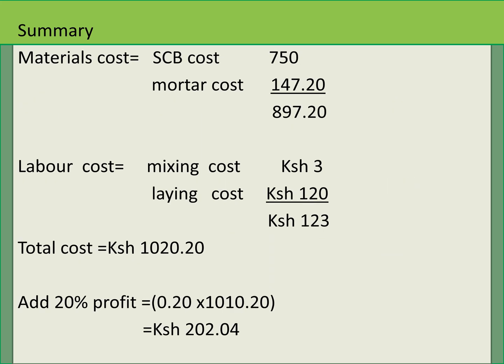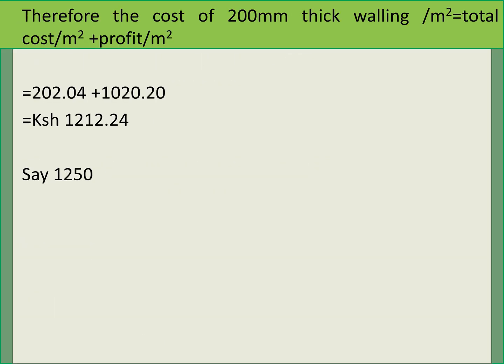The total cost of walling per meter squared equals materials plus laying cost plus mixing cost. Material cost: blocks = 750 shillings, mortar = 147.20 shillings, total = 897.20 shillings. Labor: mixing = 3 shillings, laying = 120 shillings, total = 123 shillings. Combined material and labor cost is 897.20 + 123 = 1,020.20 shillings. Adding 20% for profit and overheads: 20% of 1,020.20 = 204.04. Therefore the total cost of 200 mm thick walling per meter squared is approximately 1,250 shillings per meter squared.